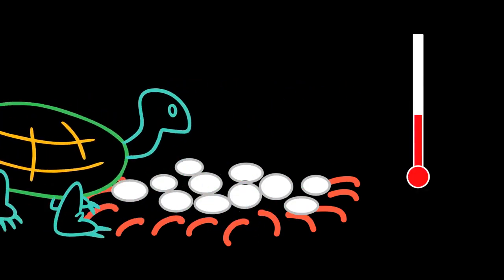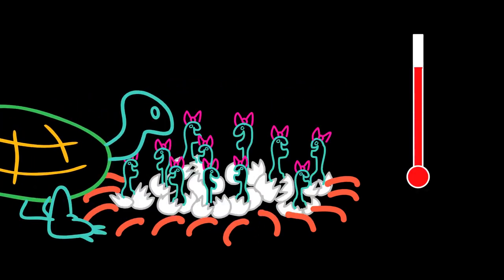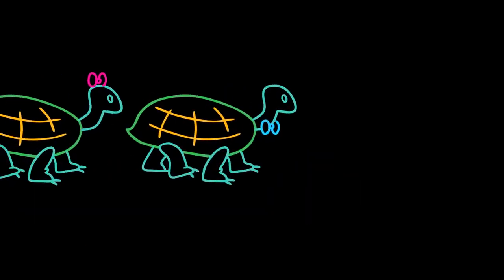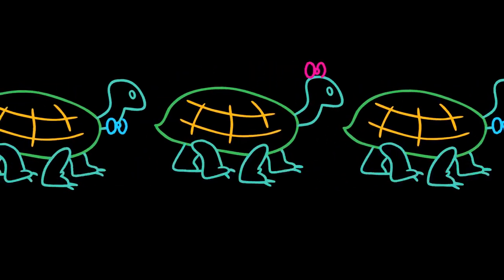In painted turtles, for example, warm temperatures above the critical temperature will produce females within the eggs, and cool temperatures will produce a male. I'm not really sure who came up with this mnemonic, but you can remember that when it comes to painted turtles, they are all hot chicks and cool dudes.